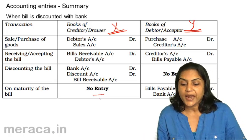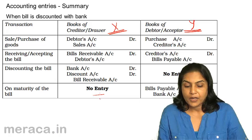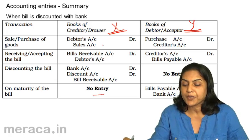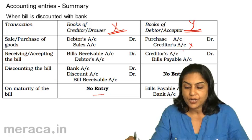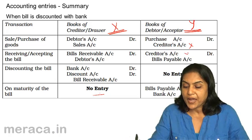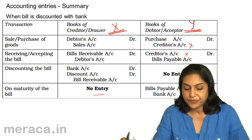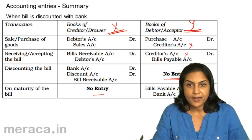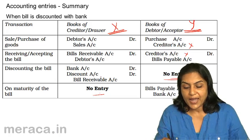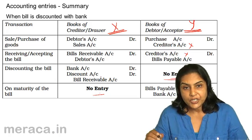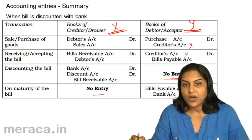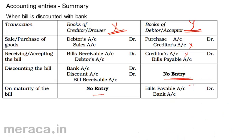For these transactions, what is the entry in the books of Y? Y has purchased the goods, so the entry is purchase account debit to X's account. For accepting the bill: X's account debit to bills payable. When X discounted the bill, Y does not pass any entry — that transaction is between X and the bank. On maturity, however, Y has to honour the bill irrespective of who presents it. When he honours the bill, Y passes the entry: bills payable account debit to bank.